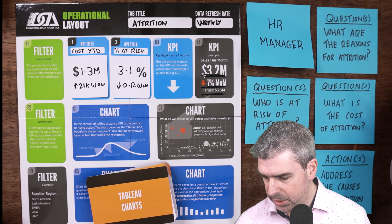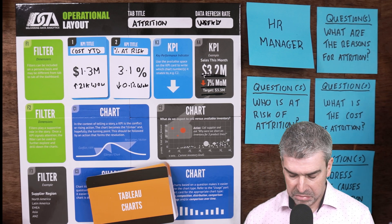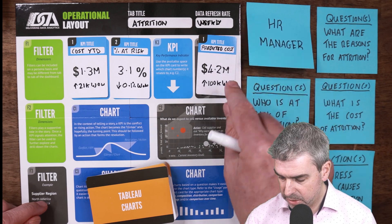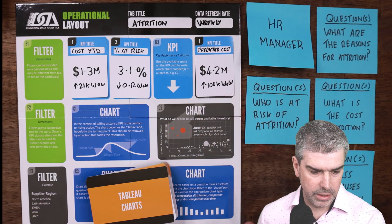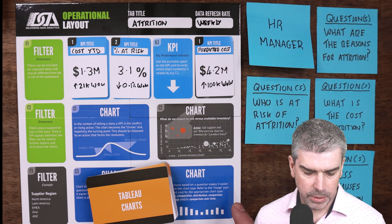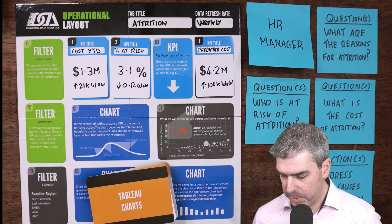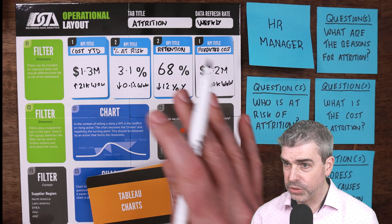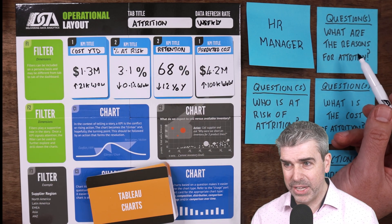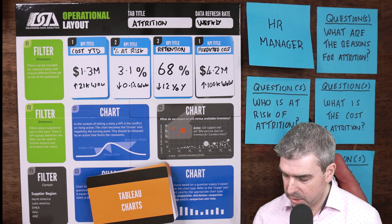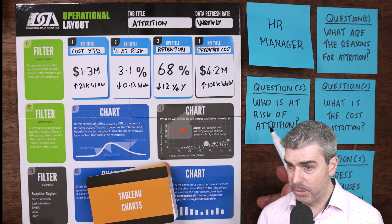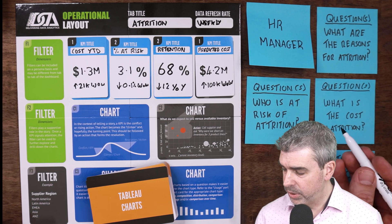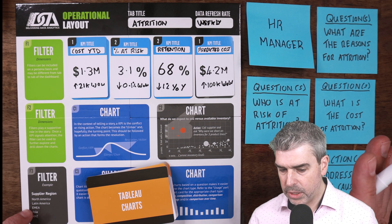Another KPI we could potentially look at is predicted cost — that could be exciting and it's highly actionable. So we could look at that and go, okay, we've got a serious predicted cost of attrition here. Maybe we also want to think about how many people we're keeping — so if we have a retention number, that's something we can look at. Let's do a quick check that we're answering our questions at a high level. 'What are the reasons for attrition?' — we don't really have that, so that one's going to have to come in the form of a chart. 'Who is at risk?' — we've got a high-level perspective with our KPI percentage at risk. 'What is the cost of attrition?' — we're giving two angles: historical year-to-date cost and a forecast or projection cost.